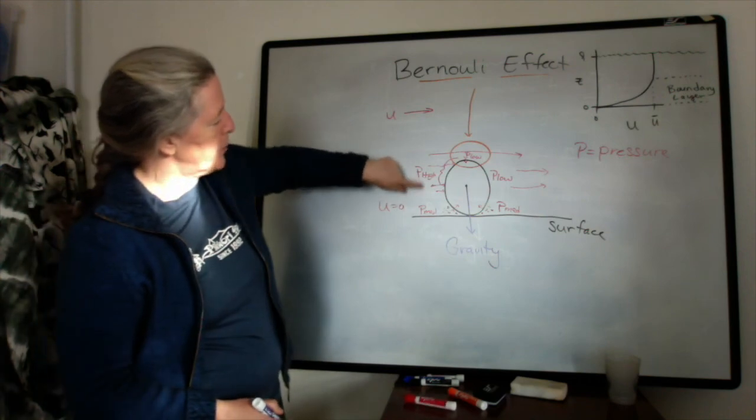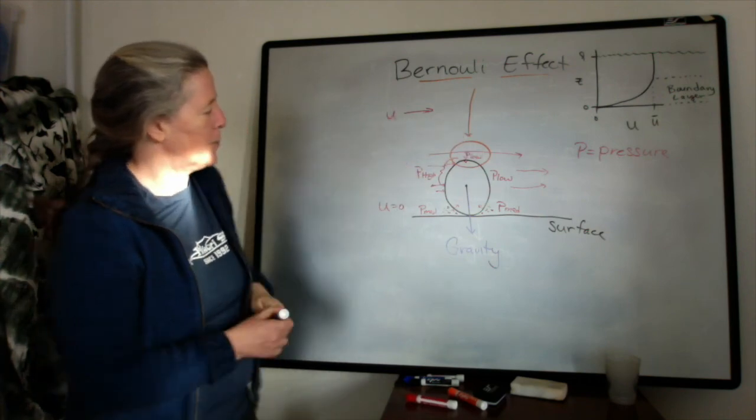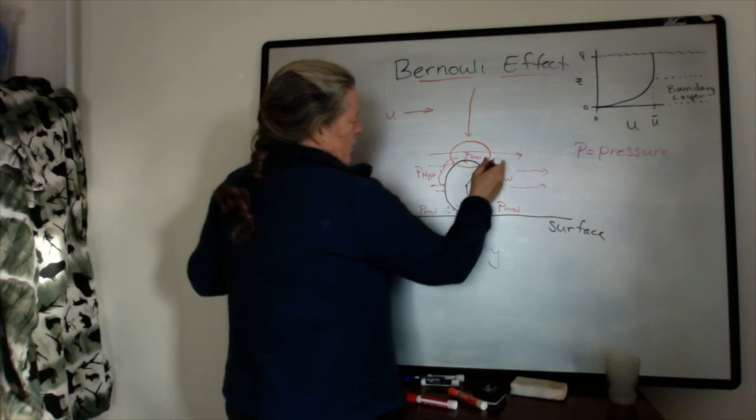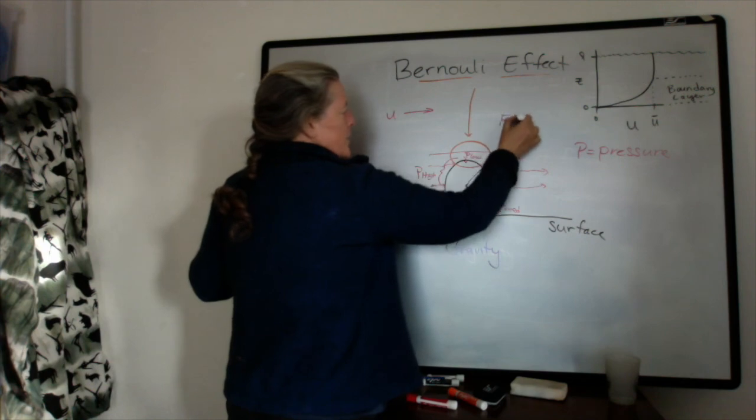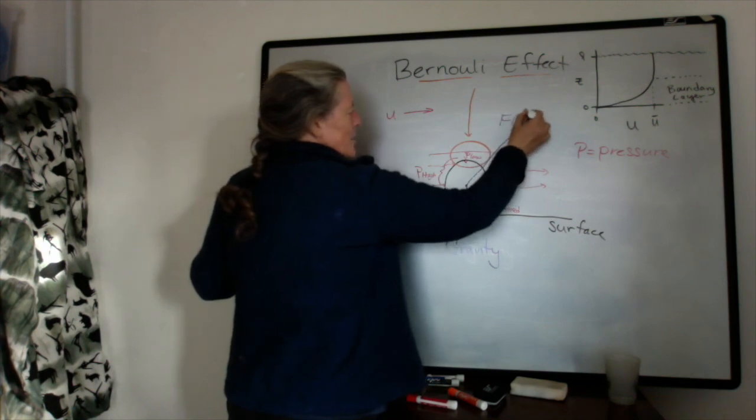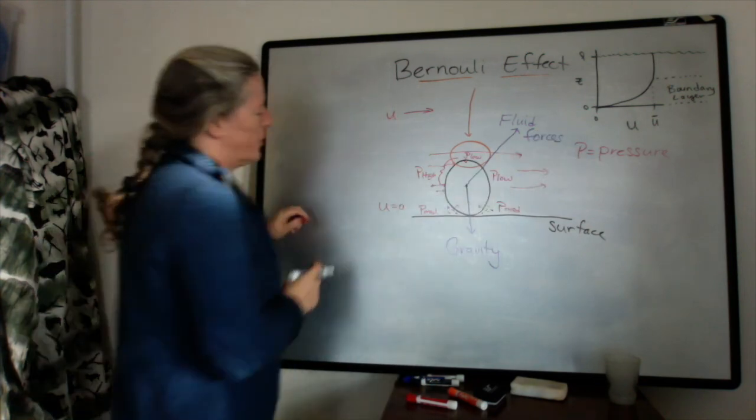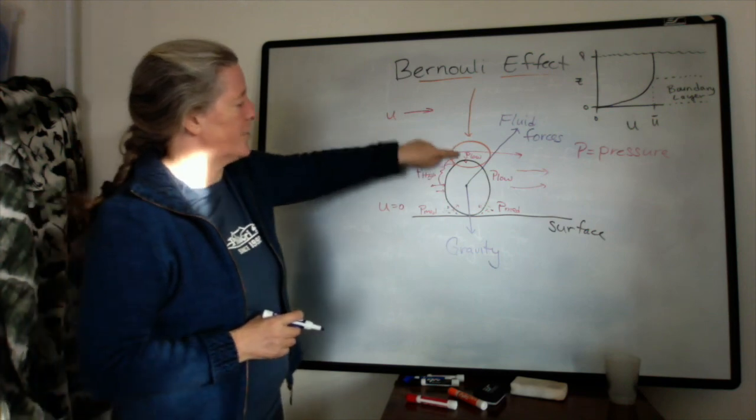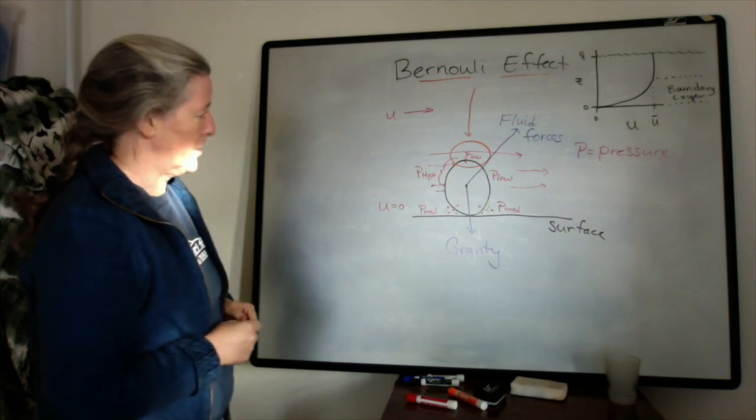So we have a medium pressure relative to a low pressure in this zone, and a high pressure here, and we end up with a net force from the fluid, which goes up and downstream. So this is the combination of the fluid forces. The downstream force coming from the high flow in this area here, and the lift coming from this Bernoulli effect on the top of the grain.